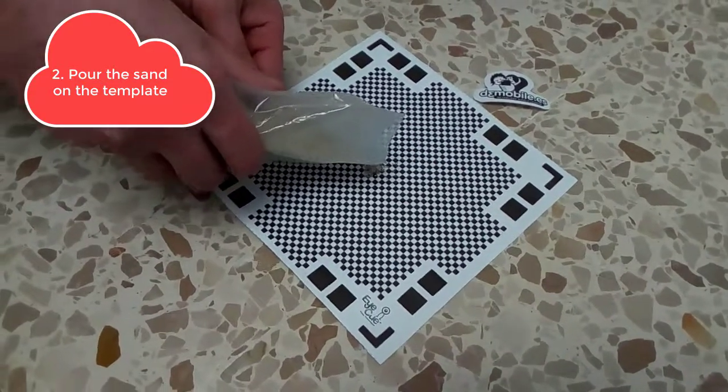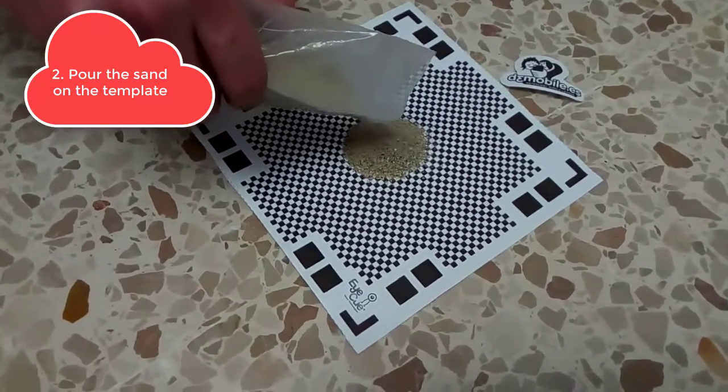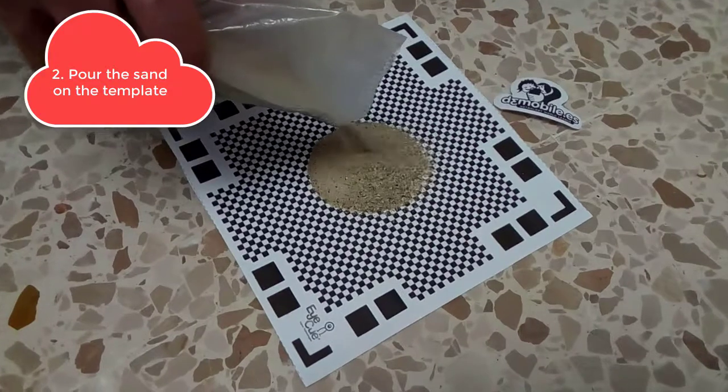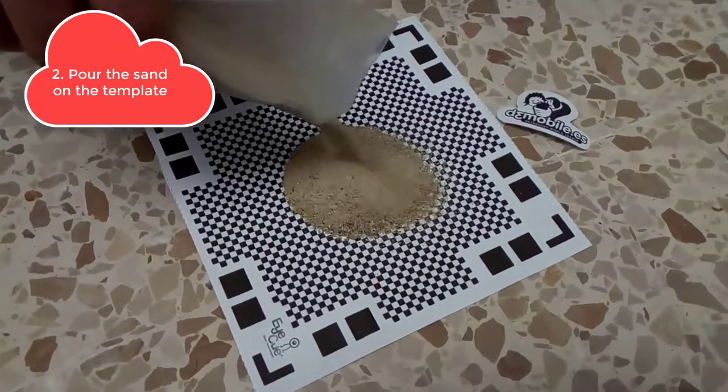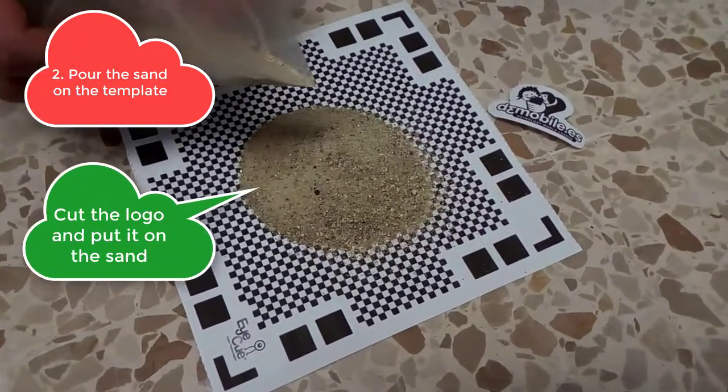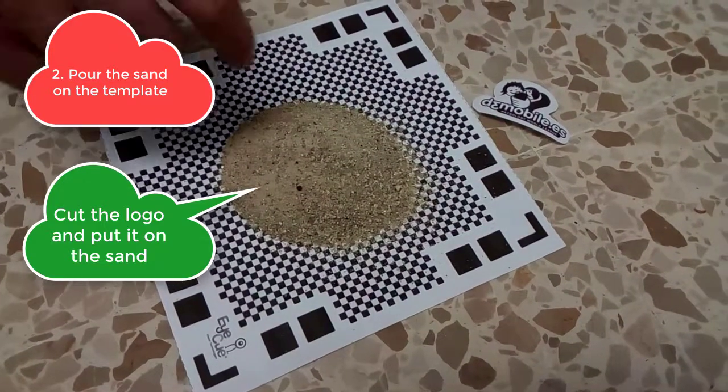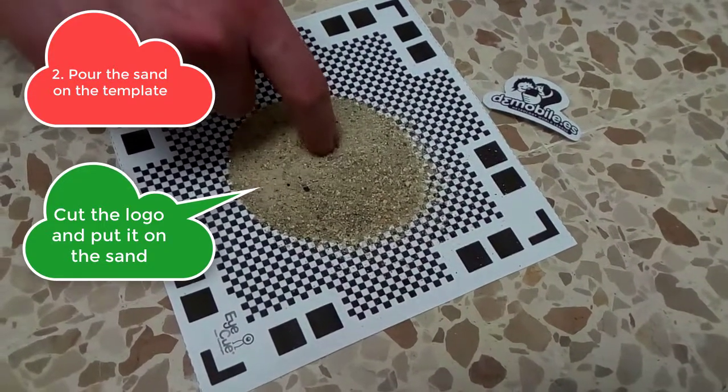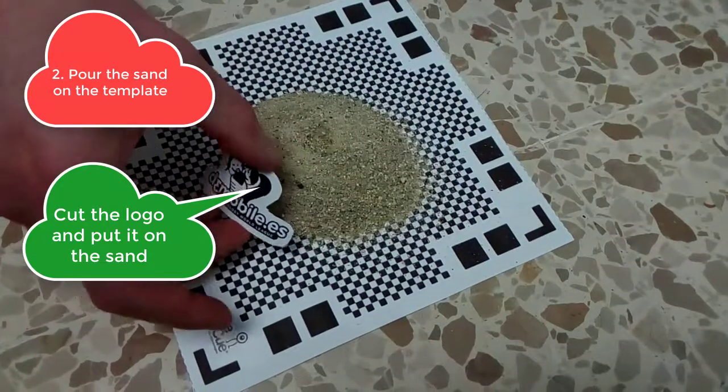Pour the sand on the template forming one or several piles. Cut the D3 mobile logo and place it on the sand.